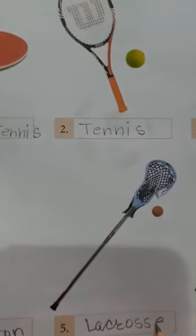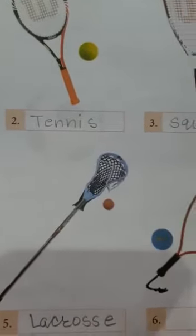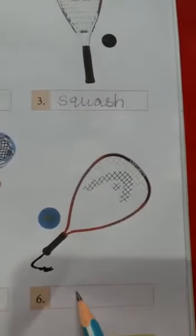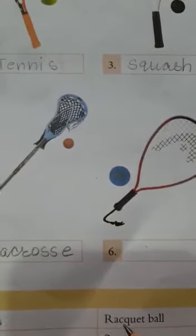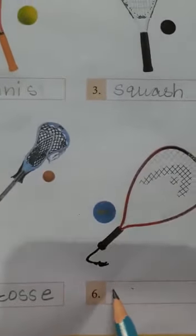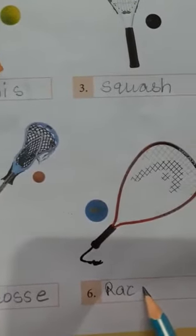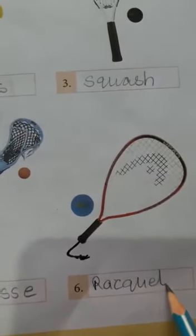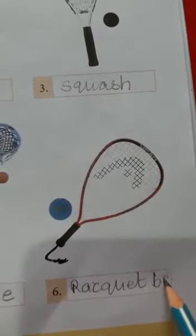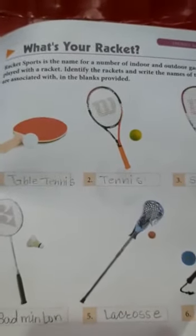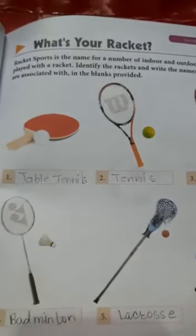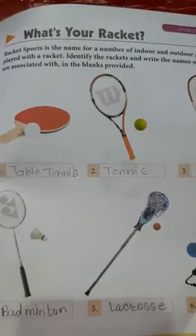The name of this game is lacrosse. And the last racket belongs to - we have options here - this is racketball. The name of the sport is racketball. This was your page number 79, covering rackets of different indoor and outdoor games.